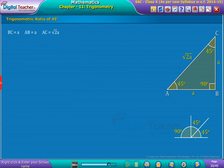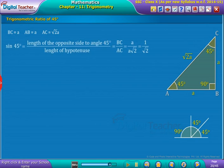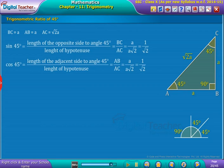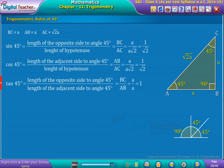Thereby, using the definitions of trigonometric ratios, the values of sine 45 degrees, cos 45 degrees, and tan 45 degrees are defined as shown on screen.